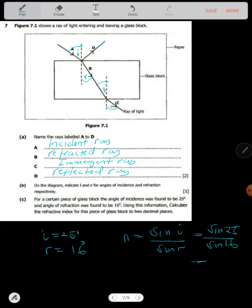So we look at that. So we are saying sine 25 divided by sine 16. Now take that to two decimal places. So we have 1.53. And we are done.